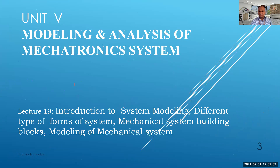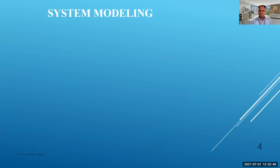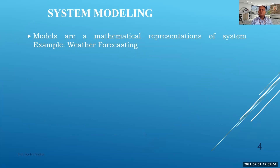We saw in unit number 2 that we had drawn some block diagrams. What those block diagrams represent is what we are going to see here — system modeling. What is system modeling? Models are mathematical representations of systems. For example, weather forecasting: if I want to forecast weather, I need some model which will represent that particular phenomenon mathematically.